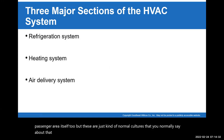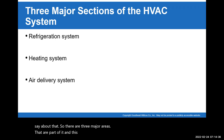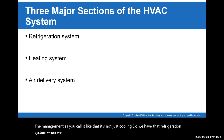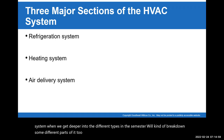There are three major areas that are part of the air management system — it's not just cooling. We have the refrigeration system, the heating system, and also the air delivery. We'll kind of break down some different parts as we get deeper into the semester.